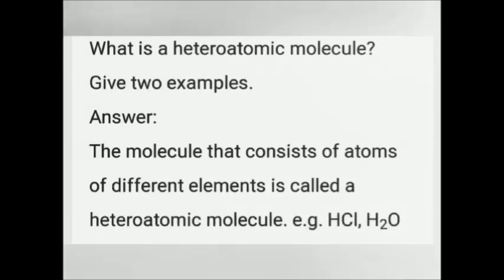What is a heteroatomic molecule? The molecule that consists of atoms of different elements is called a heteroatomic molecule. For example, hydrochloric acid and water. In H₂O, there are two hydrogen and one oxygen — two different kinds of atoms, hydrogen and oxygen, are present in the water molecule. So it is an example of a heteroatomic molecule.